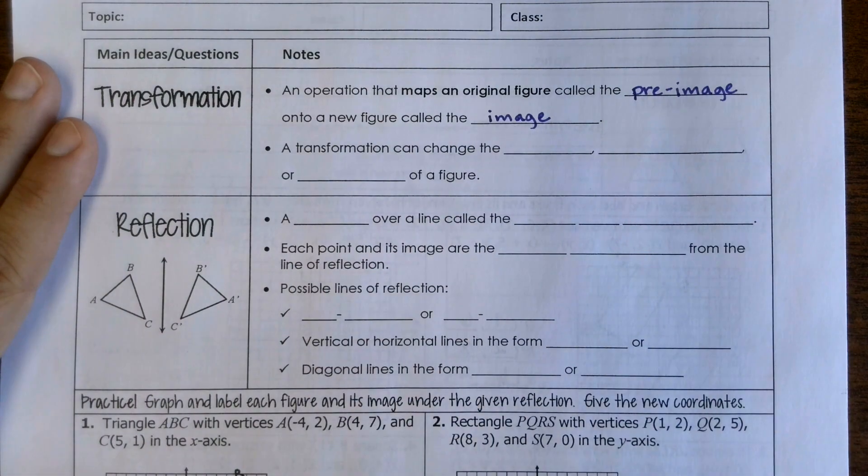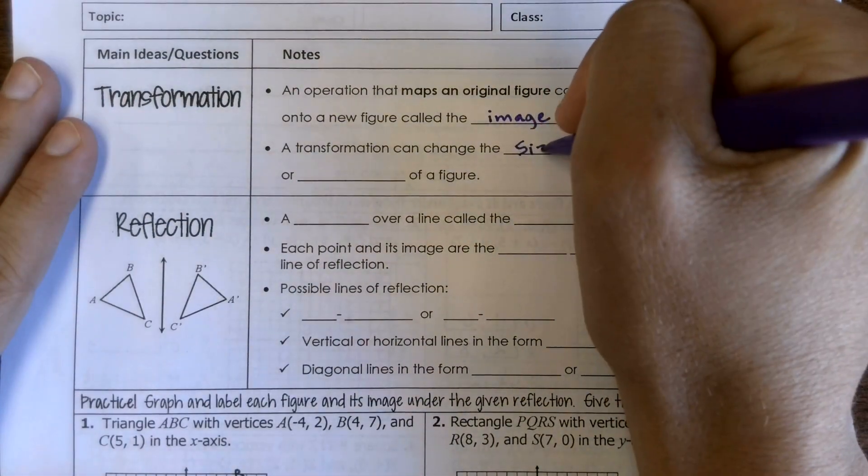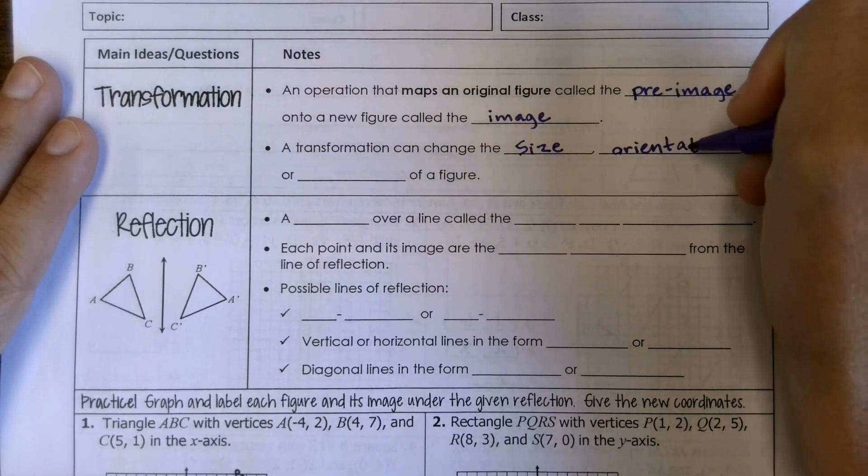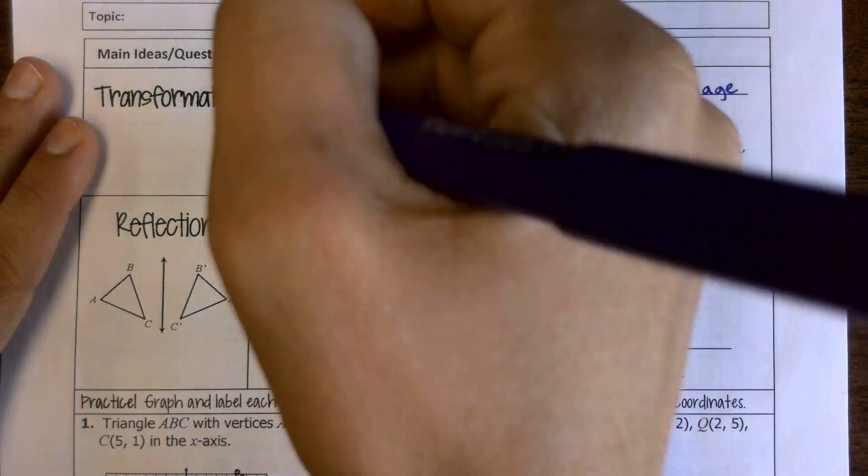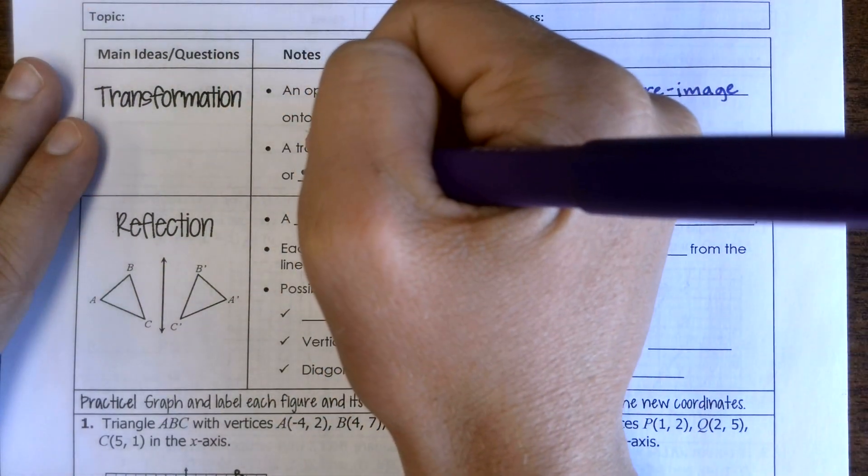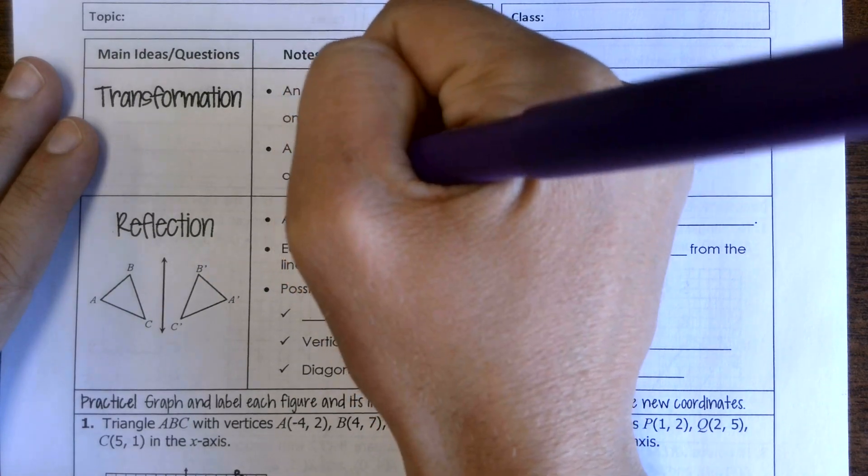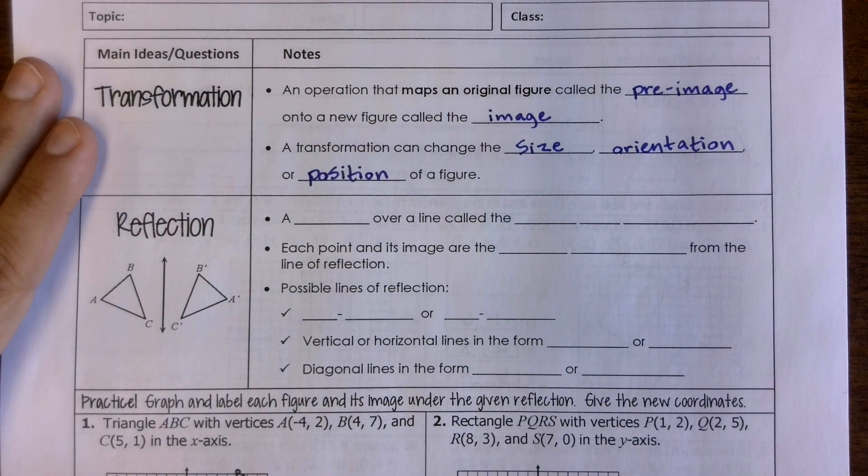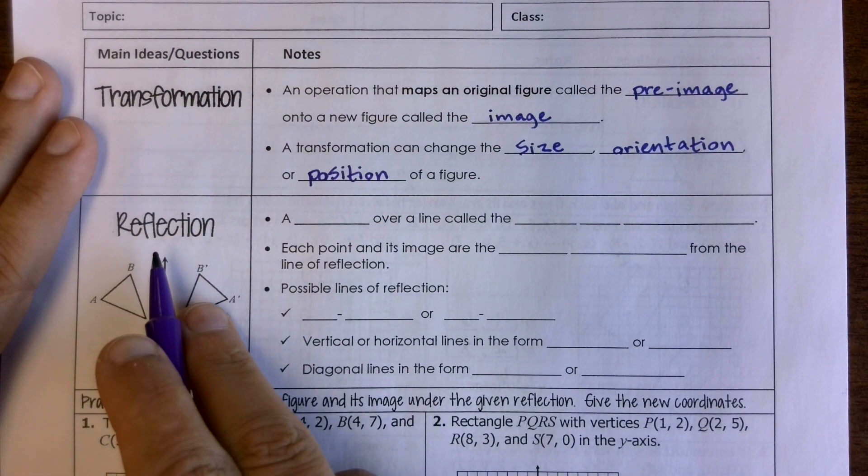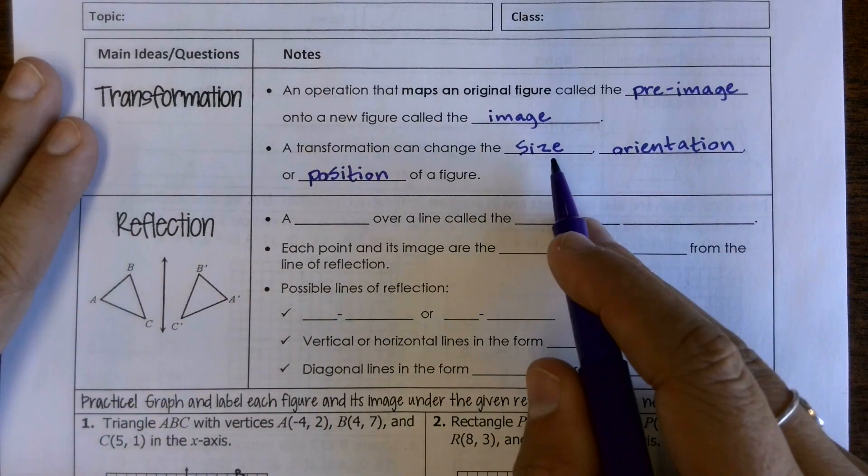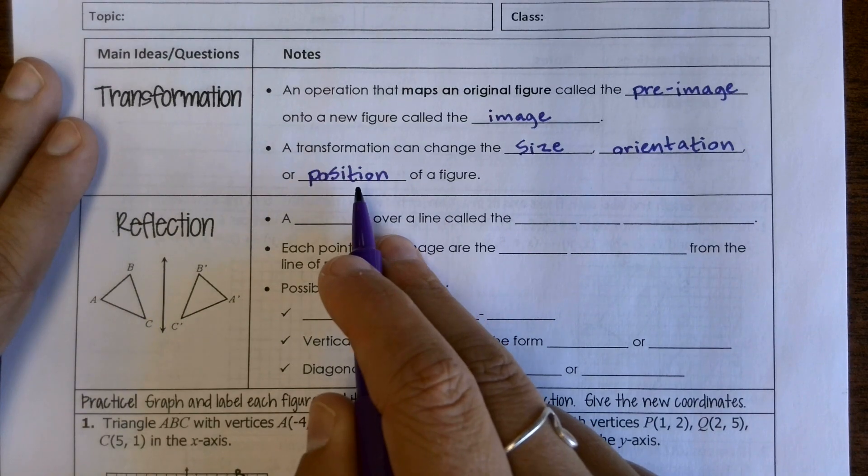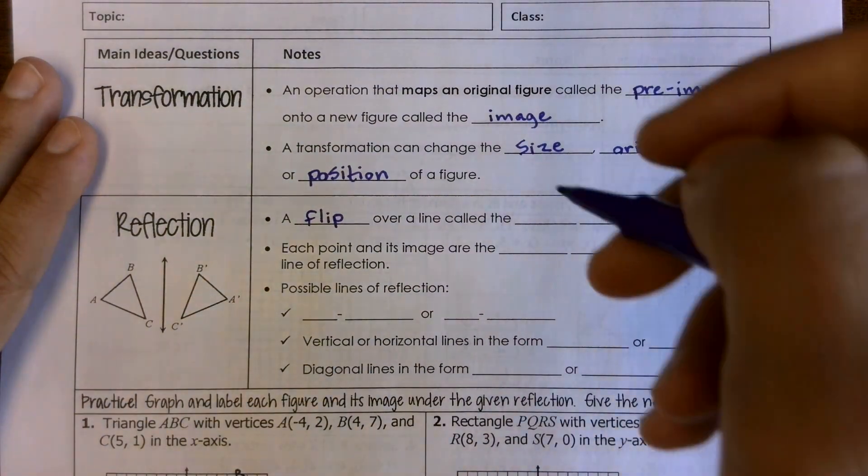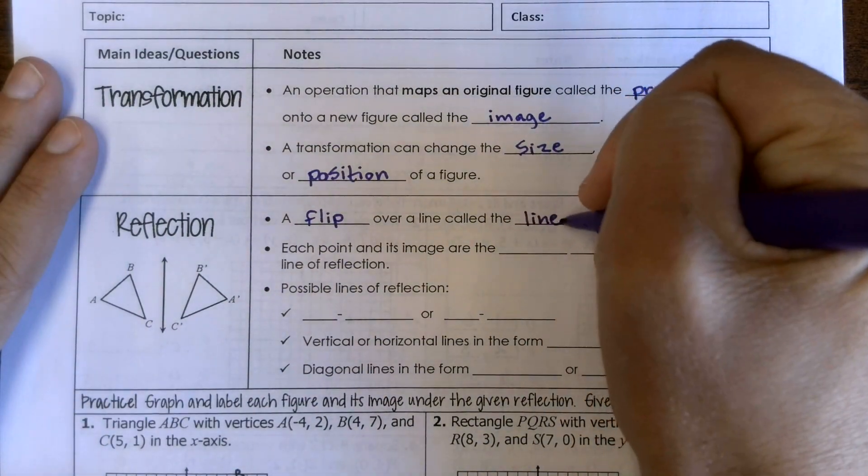A transformation can do some different things. It can change the size of a figure. It can change the orientation, like how it's facing the orientation, or it can change the position. So depending on what we're doing, or it might be a combination of the things, but we're going to focus on a reflection. So with a reflection, it's not going to change the size, but it is definitely going to change the orientation and the position. So a reflection is just a flip, if we want to put it in layman's terms, over a line called the line of reflection.